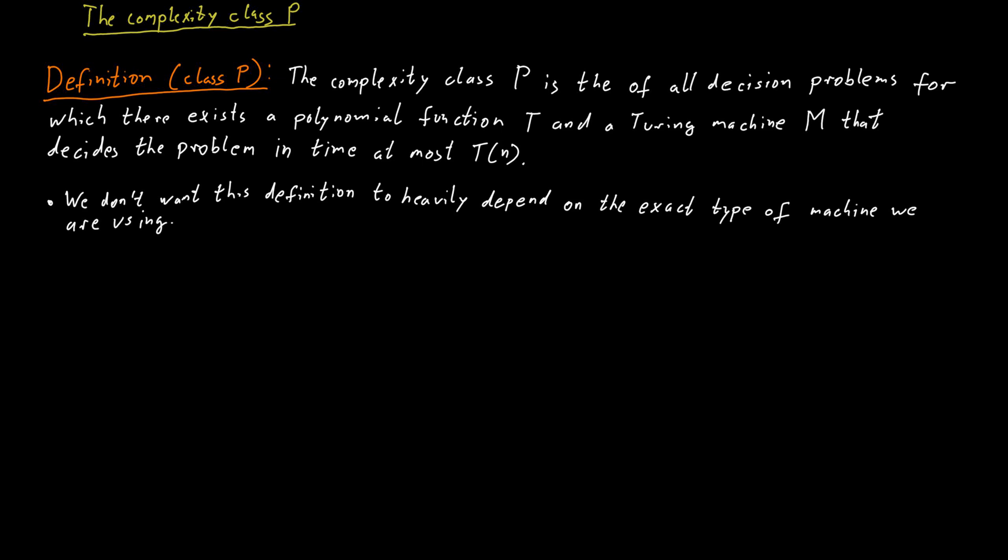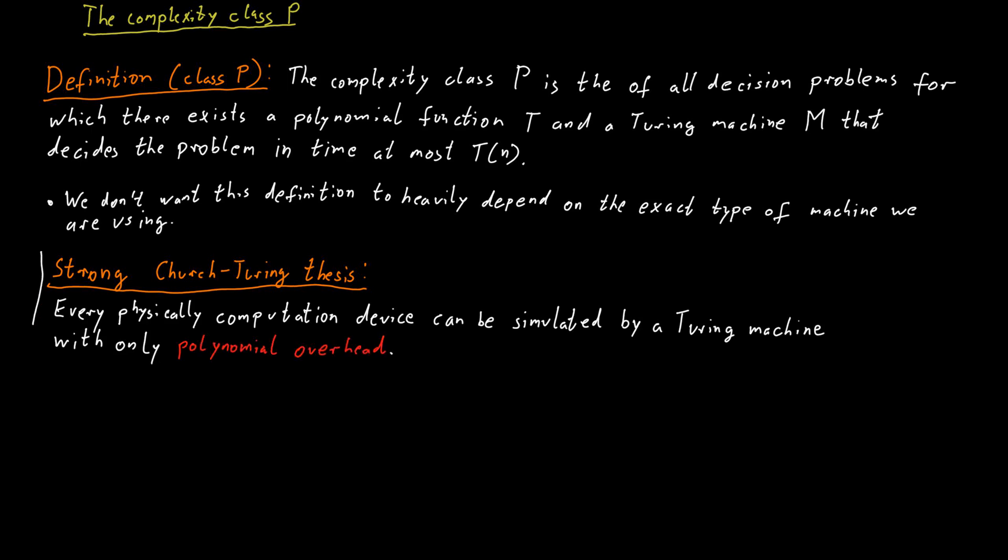This idea is captured in what's called the Strong Church-Turing thesis. It states that every physically realizable computation device, let it be silicon based, DNA based, neuron based, can be simulated by a Turing machine with only a polynomial overhead. You will notice that the only difference between the Church-Turing thesis and the Strong Church-Turing thesis is the addition of the phrase 'with polynomial overhead.' So not only should the simulation be possible, the simulation should also be efficient.